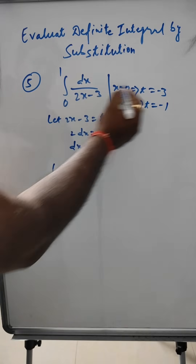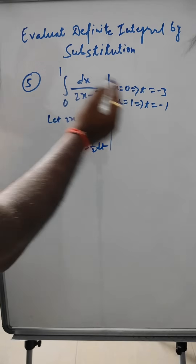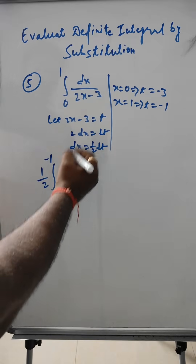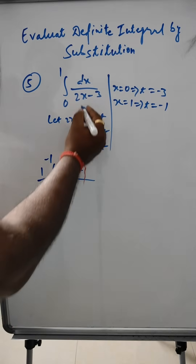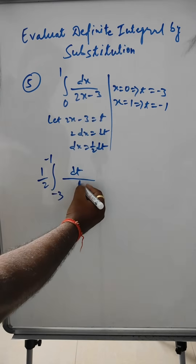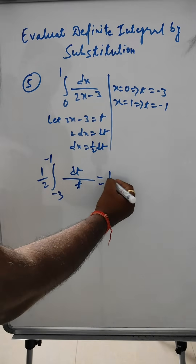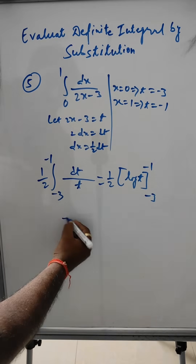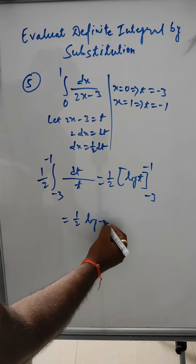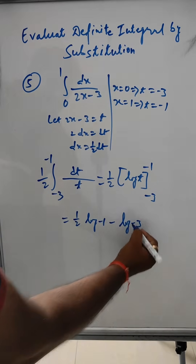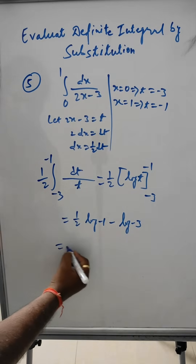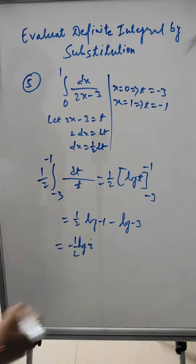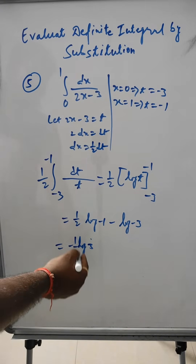Substituting limits: from -3 to -1. The integral becomes (1/2)∫₋₃^(-1) (1/t) dt = (1/2)[log t] from -3 to -1 = (1/2)(log(-1) - log(-3)). The answer is -½ log 3.